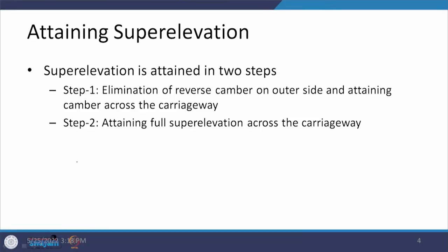We will see what extra widening is and what particular value of extra widening needs to be provided on a circular curve. Let us start with the attainment of superelevation. The superelevation is attained in two steps — step 1 and step 2. We are on a straight section and then there is a circular curve, so we are going to move on this circular curve and therefore a superelevation has to be provided.